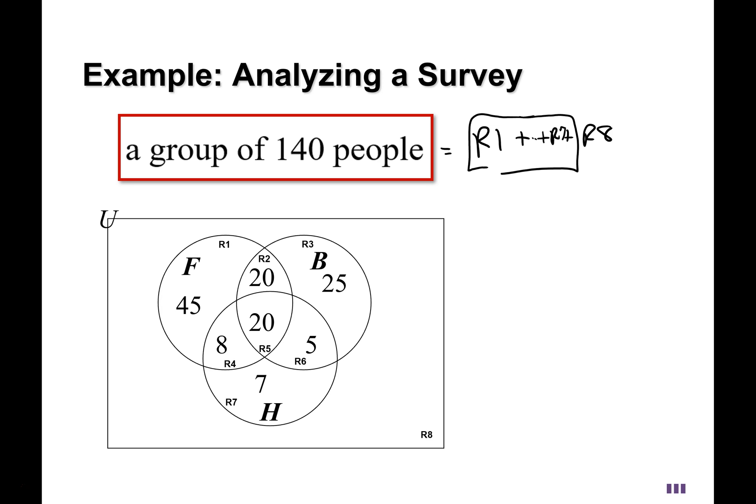And so we can add all those up and then take that away from 140. So what is 45 and 20 and 25 and 20 and 8 and 5 and 7? If we add all those up, what do we get? Well, 45 and 25, that's a nice 70. 70 and 40, that's 110. And then I believe 8, 5, and 7 is 20. So 110 and 20 make 130. Plus region 8 should be equal to the 140 total, leaving you with 10 for region 8 when you subtract.